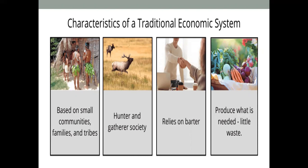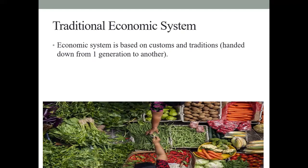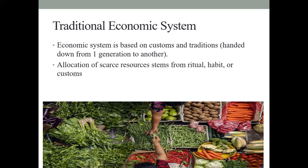They basically produce small amounts of products and generate little waste. This economic system is based on custom and tradition, handed down from one generation. Allocation of resources depends on habits, rituals, or customs. They use a barter system — trading product for product with no money. The problem with barter is that it doesn't always involve an equal exchange of commodities of the same value.